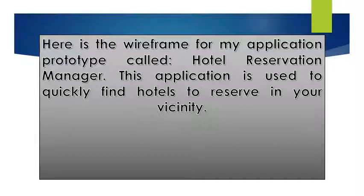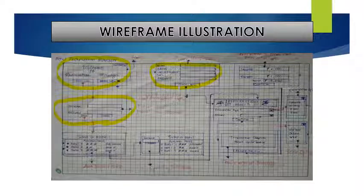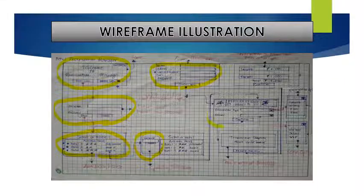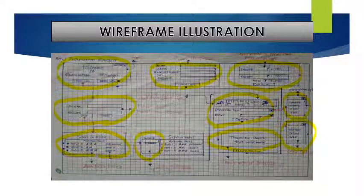Here is the wireframe for my application prototype called Hotel Reservation Manager, used to quickly find hotels to reserve in your vicinity. The contents of this wireframe illustration are: a home screen, a registration screen, a login screen, the window for the list of hotels, the specific search window, the target hotel window with its contents, reservation option, and a room option. The transaction window, and finally, the window for a completed transaction.